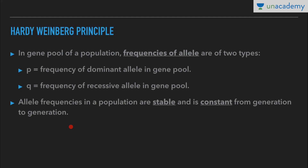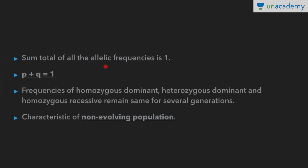These allele frequencies in a population are stable and constant from generation to generation — this is the Hardy-Weinberg principle. The gene pool of a population remains constant. This is also known as Hardy-Weinberg equilibrium, or genetic equilibrium. The sum total of all the frequencies is 1, that is, P plus Q equals 1.